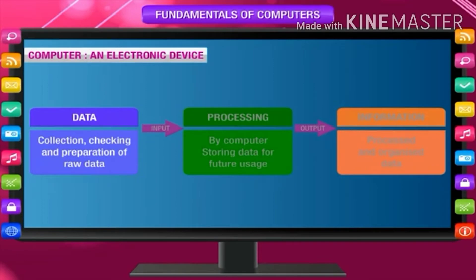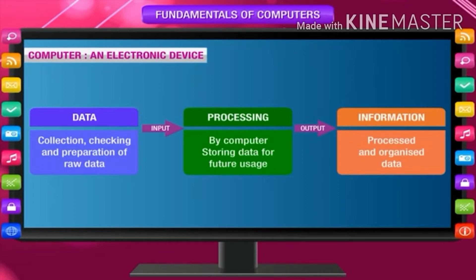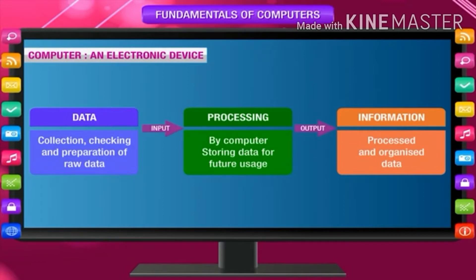Data involves the collection, checking and preparation of raw data. Input is followed by processing by the computer and storing data for future usage. Output is the resulting information — processed and organized data. We input data and instructions into the computer, it processes data according to our instructions and produces meaningful information called output. This output can again be used as input for further processing, making it a cycle.